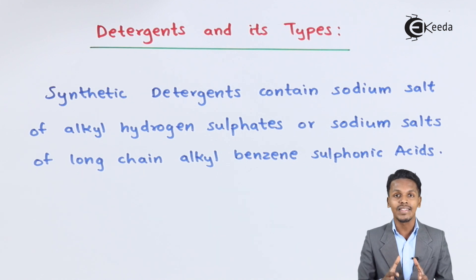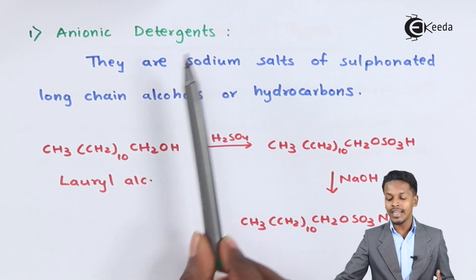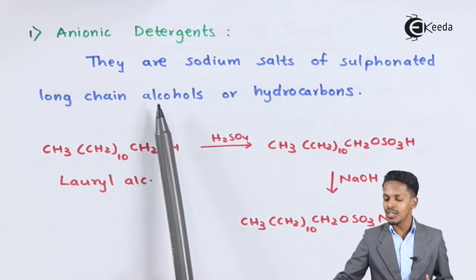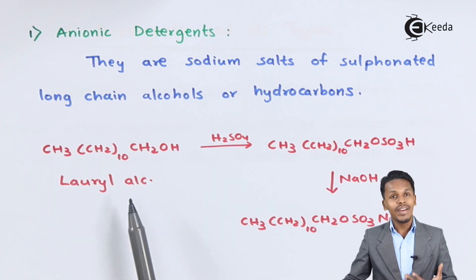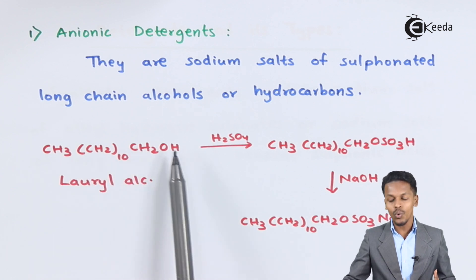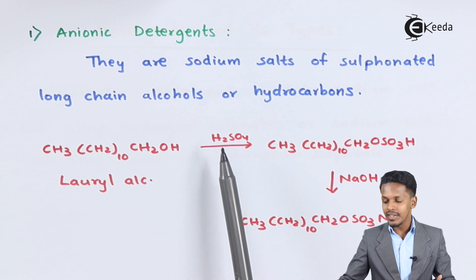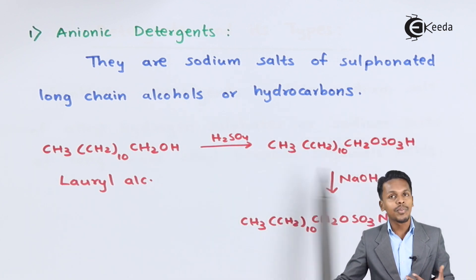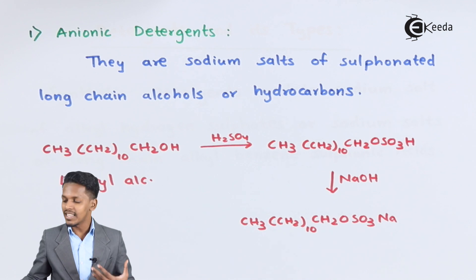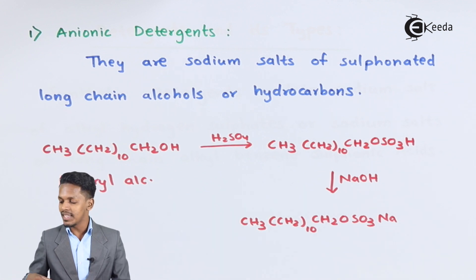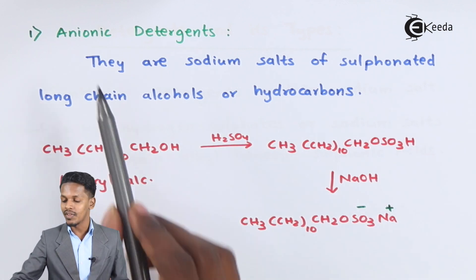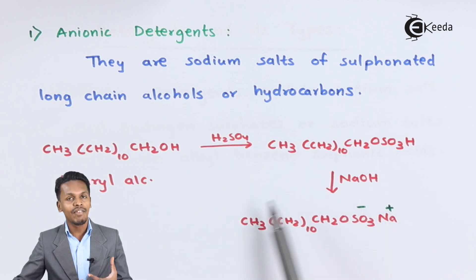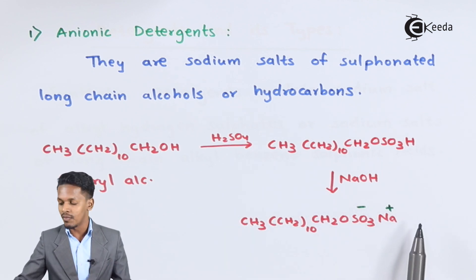Anionic detergents are sodium salts of sulfonated long chain alcohols or hydrocarbons. For example, lauryl alcohol — CH₃(CH₂)CH₂OH — is reacted with H₂SO₄ by a sulfonation reaction. The product obtained is sodium lauryl sulfate. Here, sodium acquires a positive charge while the whole sulfate group acquires a negative charge — that is why it is called an anionic detergent, as it is a negatively charged detergent that acts as a cleaning agent.